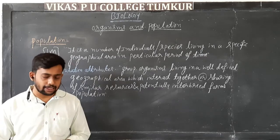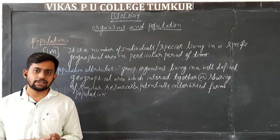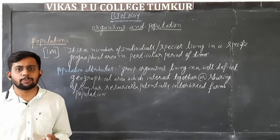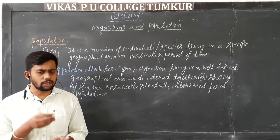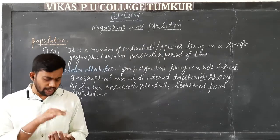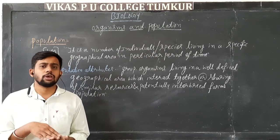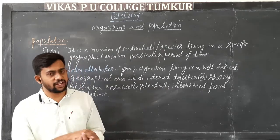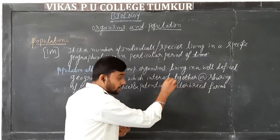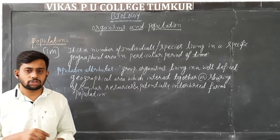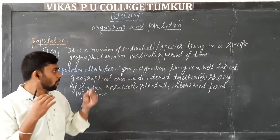For example, in this area there are human beings, plants, small species, snakes, butterflies, and birds. In this area there are human beings, flowering plants, gymnosperms, angiosperms, ferns, mushrooms, birds, and butterflies. There are different kinds of organisms. In this area they are sharing similar resources together. The population is similar — they share similar resources with the group of organisms and potentially interbreed.